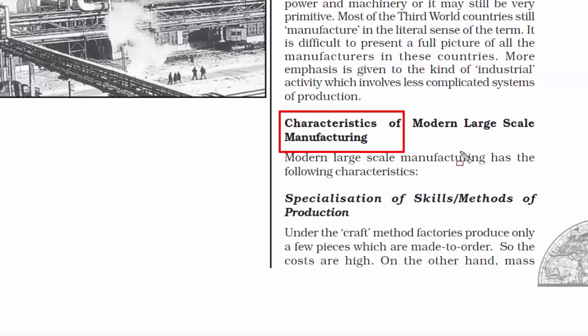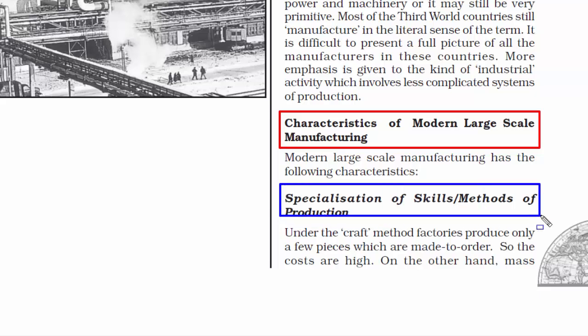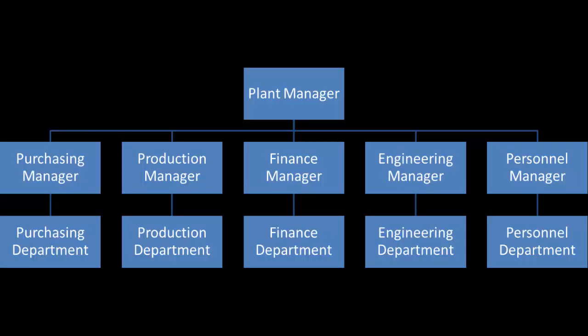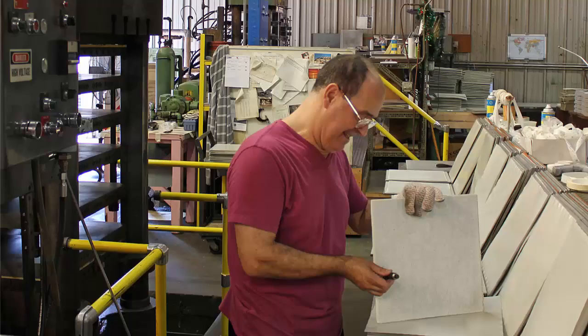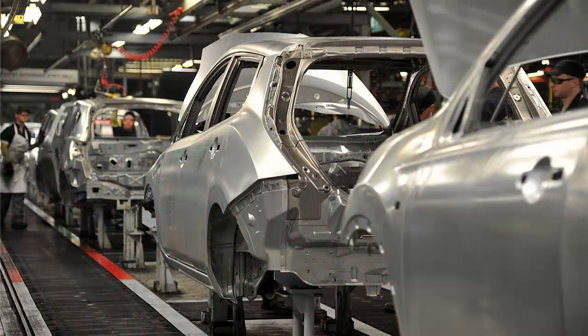Now we're going to read about the characteristics of modern large-scale manufacturing. When we say characteristics, we mean their advantages, strengths, and areas of expertise. The first one is specialization of skills or methods of production. This quality is quite common in big modern factories — the labor force is divided into departments and workload is distributed so that each worker performs only one task repeatedly. This way, there is no delay in the production line.